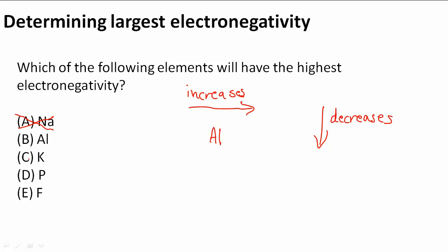Now we have K. K is in the next period under Al. And we know as we go down, we decrease. So that must mean that K is also out of the running.